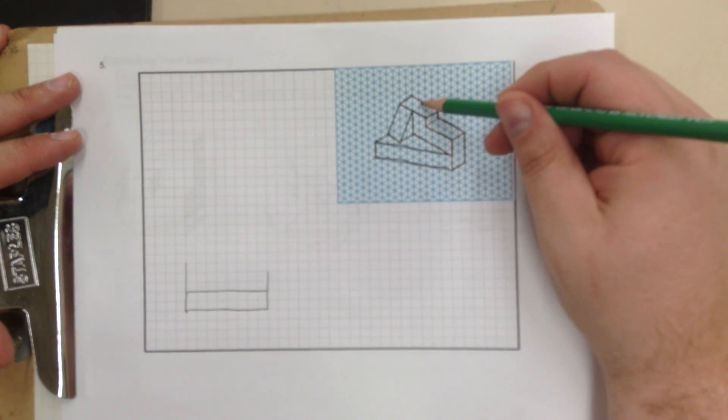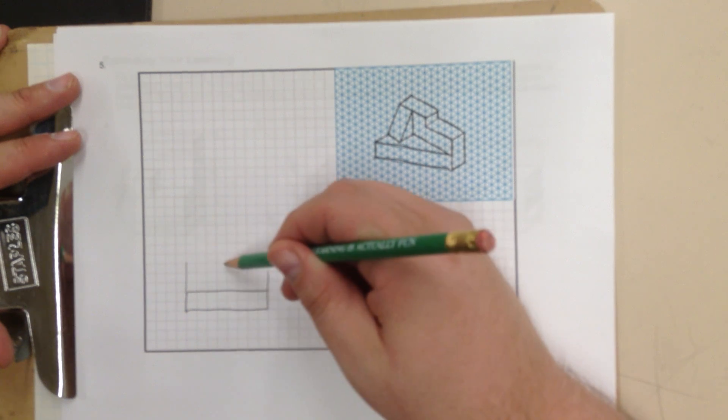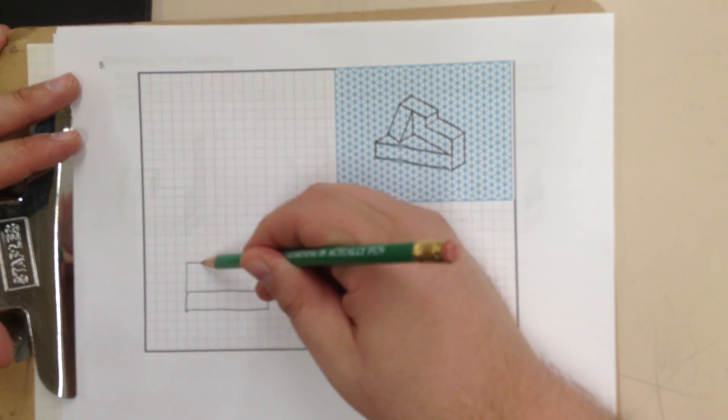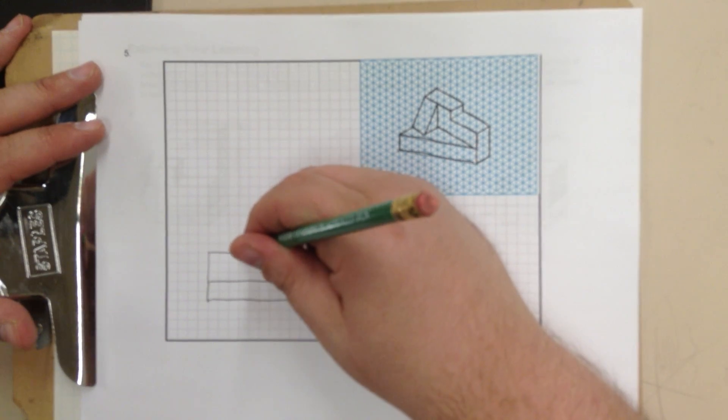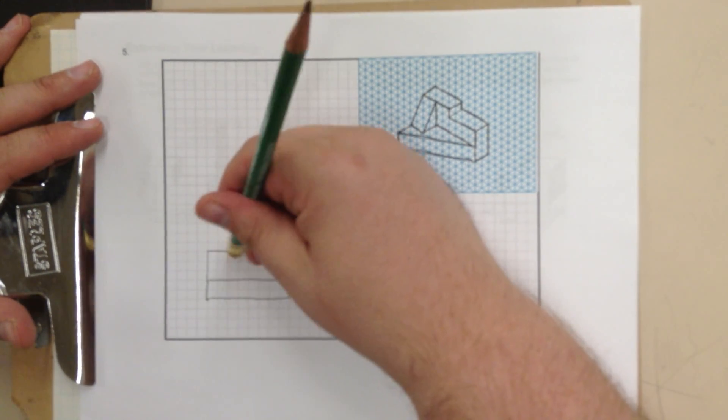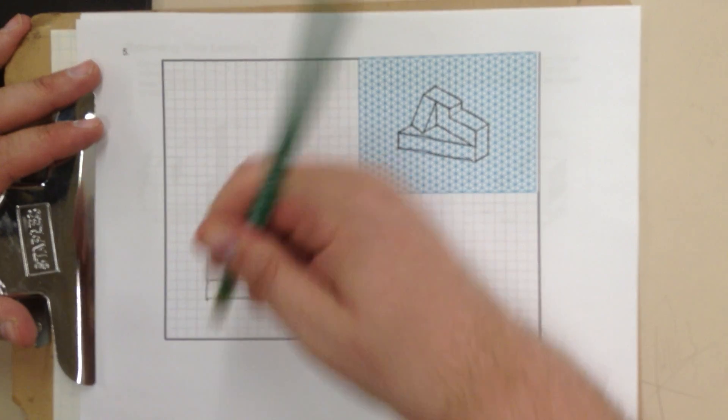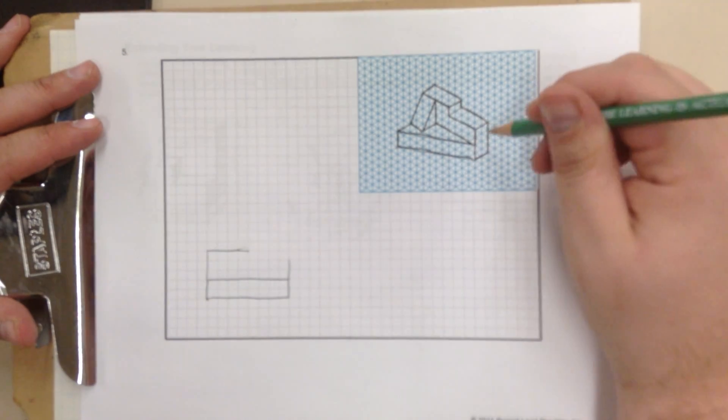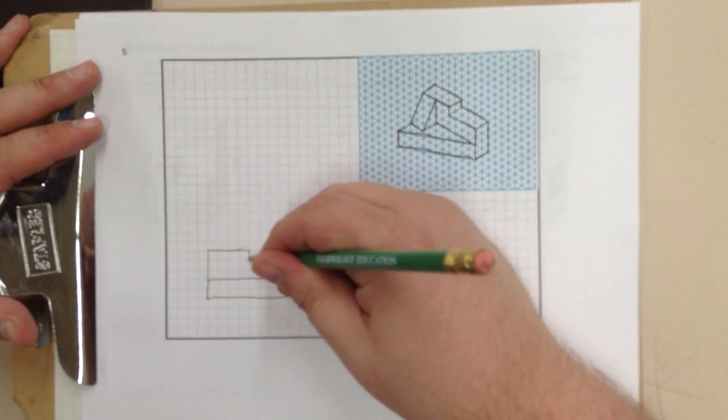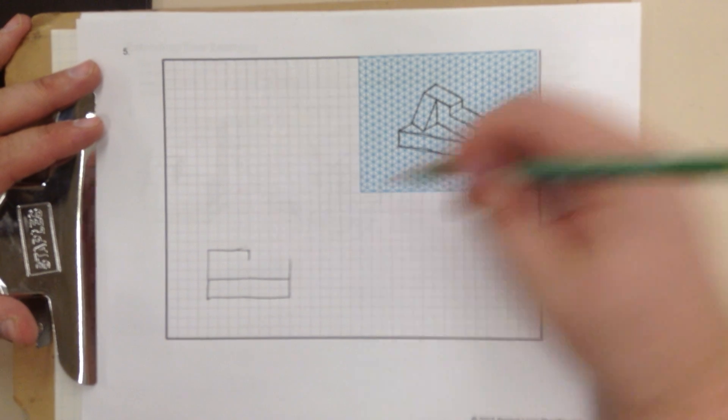Just like so. Now, it is 1, 2, 3, 4 over. 1, 2, 3, 4 over. Oops. Goes one down. And then 1, 2, 3, 4 over.